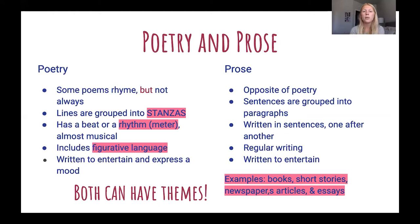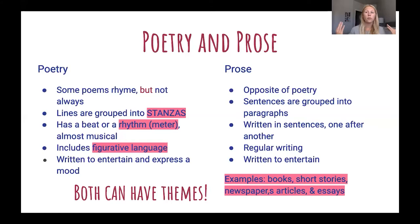Some characteristics of prose: it is the opposite of poetry. Sentences are grouped into paragraphs as opposed to stanzas. Written in sentences one after another with regular writing. Prose is written to entertain. Examples of prose would be books, short stories, newspapers, articles, and essays — things we are very familiar with in our daily lives.